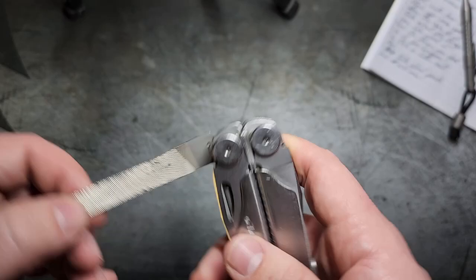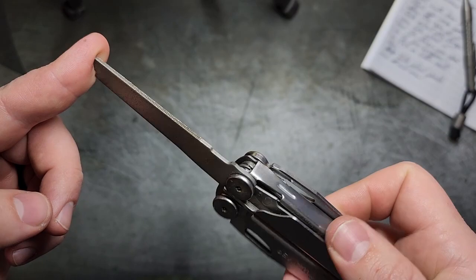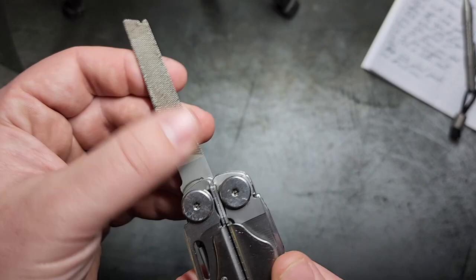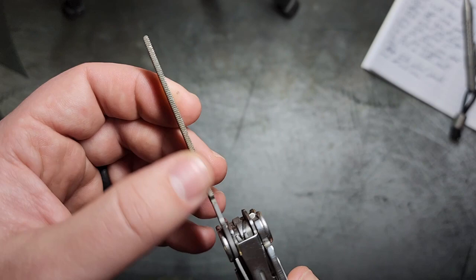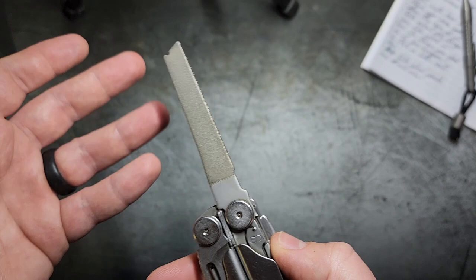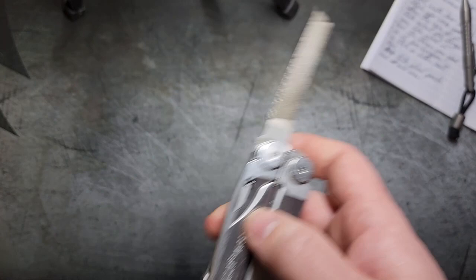One of my favorite tools on this that probably gets one of the most amount of use for me is the file, both the diamond side and just the standard kind of like bastard cut side. It's great, it works really well. You even have it on this so you can actually file stuff almost like a saw but a really fine kind of blade. This has worked out a lot for me because I mean how often do you carry a file on you other than this but I've definitely had a lot of scenarios where I need them.